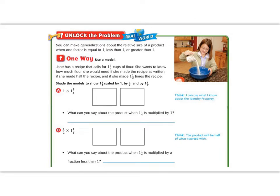Today we're going to be multiplying factors greater than 1, which we can call a mixed number in a fraction, times a fraction and times a whole number. We need to know if our numbers are going to get bigger or smaller when we multiply. This will help us estimate and know if our answers are reasonable. You can make generalizations about the relative size of a product when one factor is equal to 1, because when we multiply by 1, nothing changes.